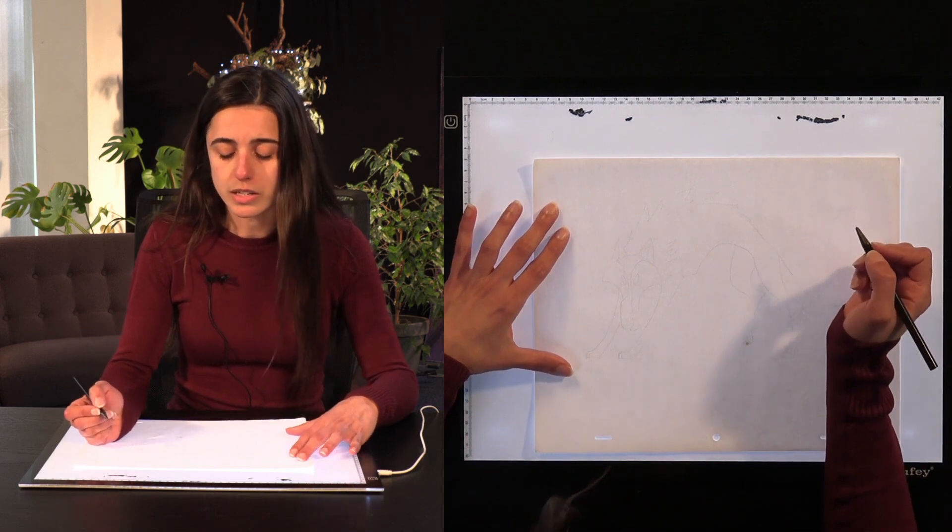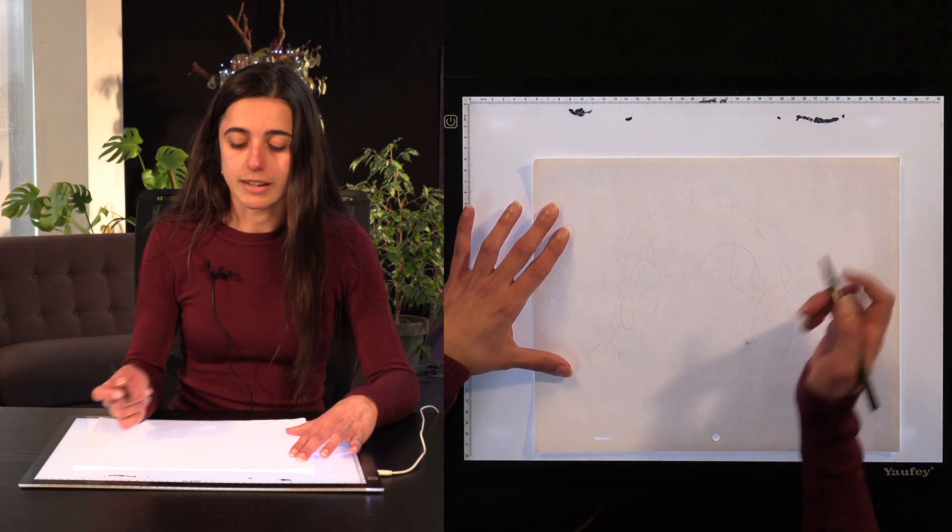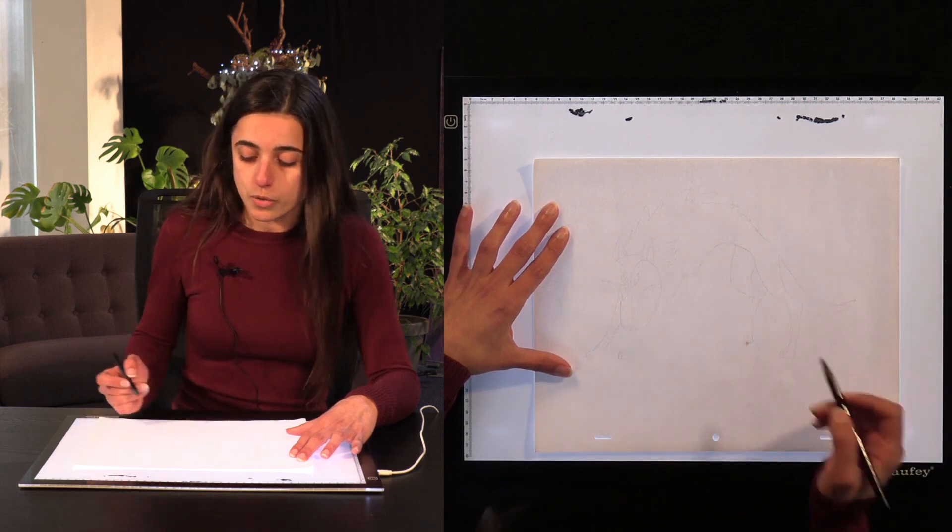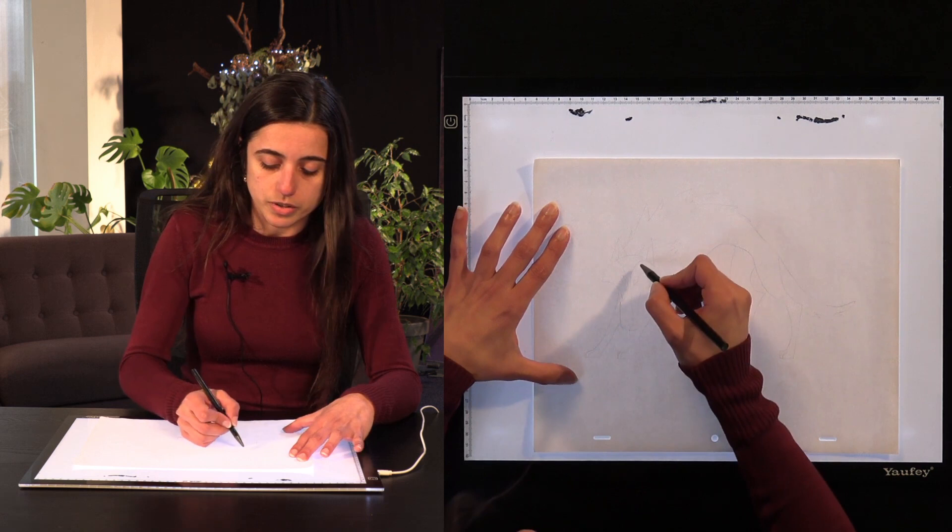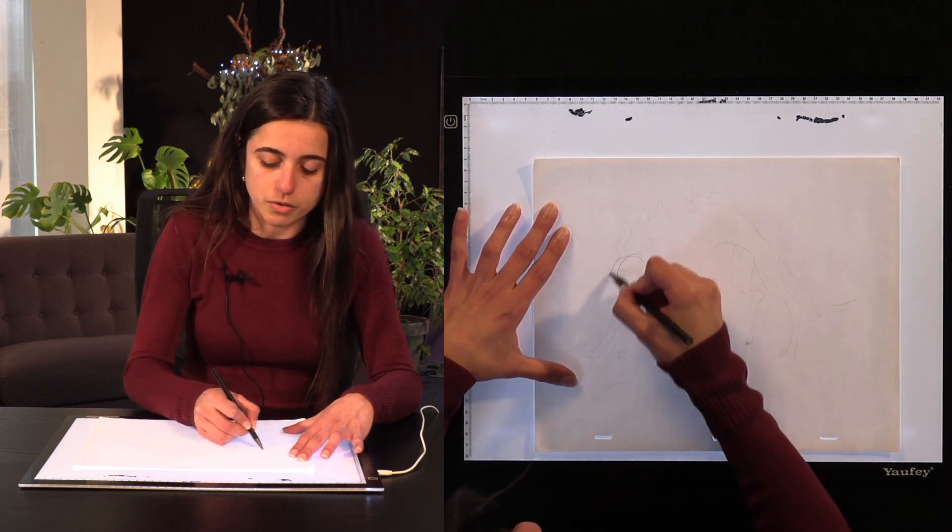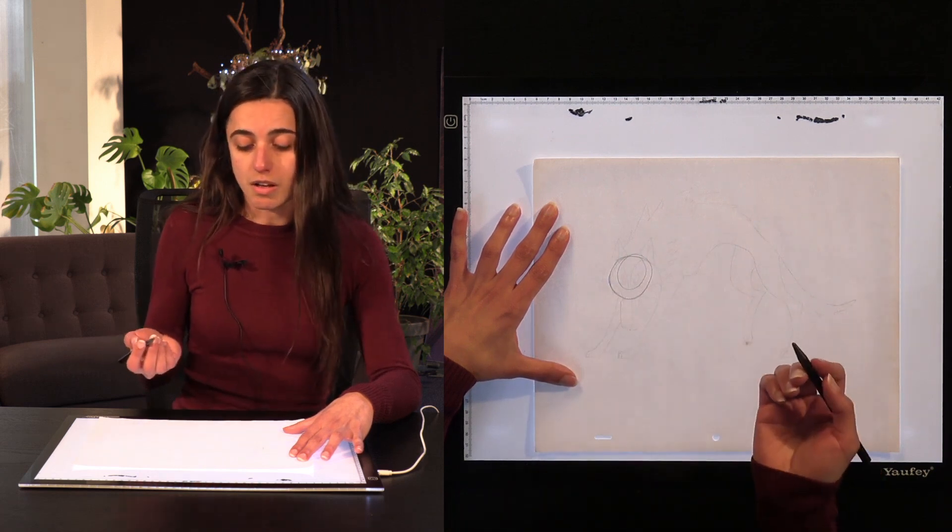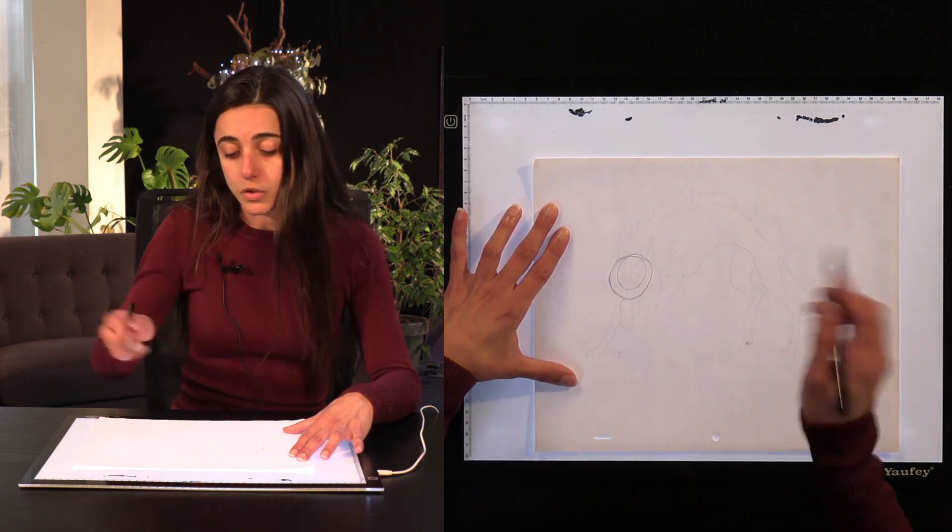The way you start is what we call a construction drawing which is to give us a guideline of where he's going to be. So first we start with a circle around here which gives us an idea of where the head's going to be positioned. Now it doesn't have to be very precise, you can draw very loosely.